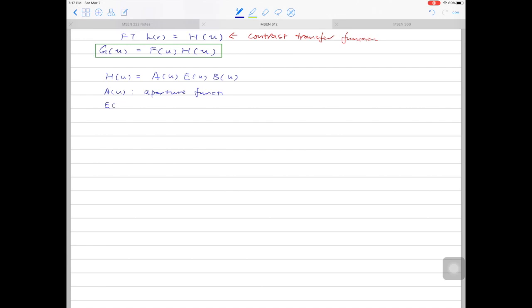E(u) is called the envelope function. Envelope function tells you about the attenuation of the wave.